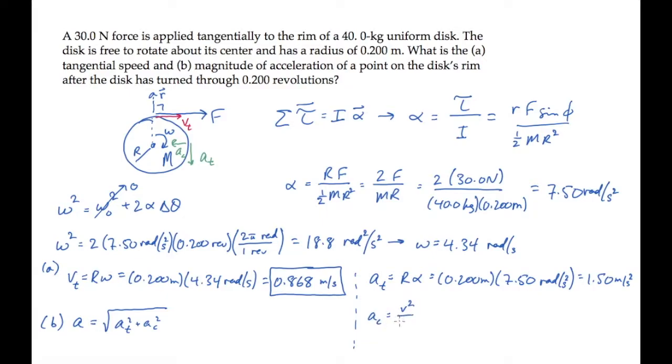The centripetal component is V squared over R, which is equal to R times omega squared. Substitute values and calculate to see it equals 3.77 meters per second squared.